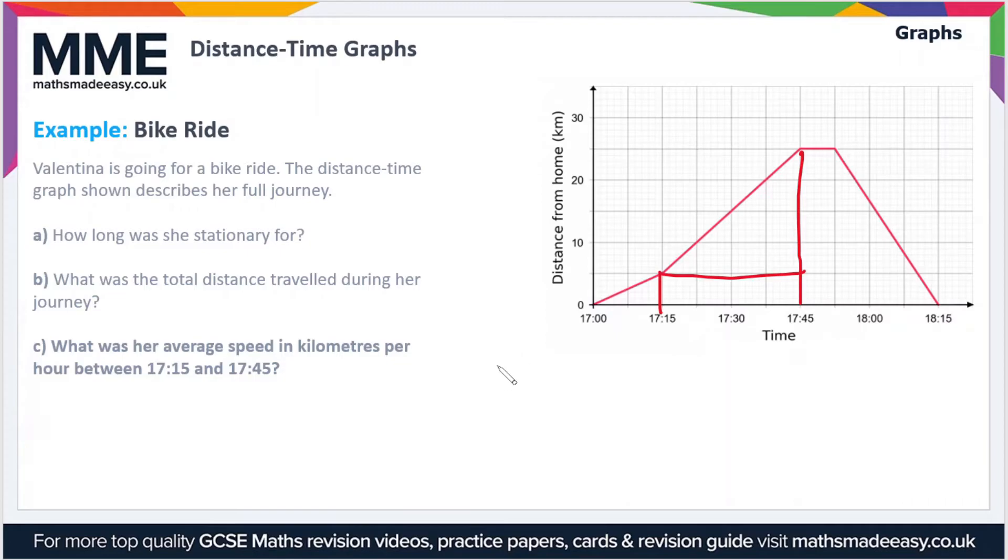In order to get the speed, we find the gradient, which is the distance divided by the time. What's the distance traveled? Well, she's gone from a distance of 5 kilometers to a distance of 25 kilometers, so that distance is 20 kilometers. And the time taken, from 7:15 to 7:45, that's 30 minutes or 0.5 hours. So her speed is 20 kilometers divided by 0.5 hours, which is 40 kilometers per hour.